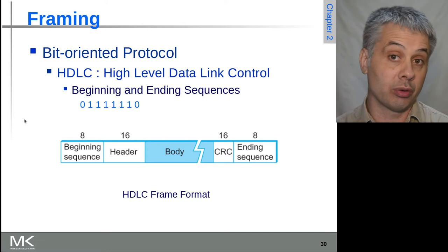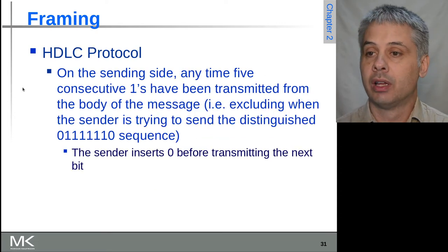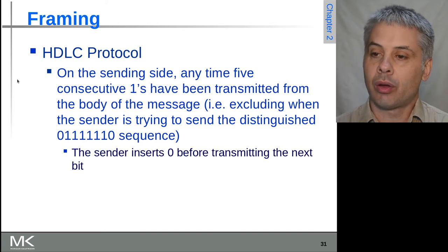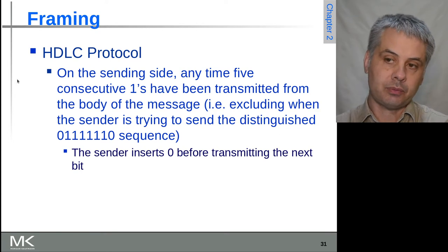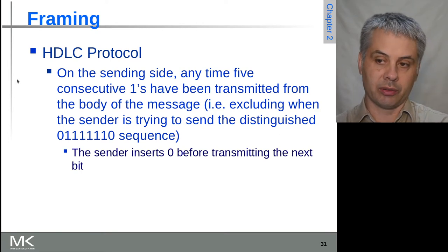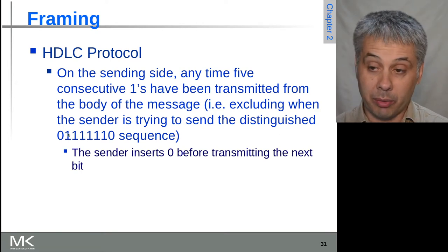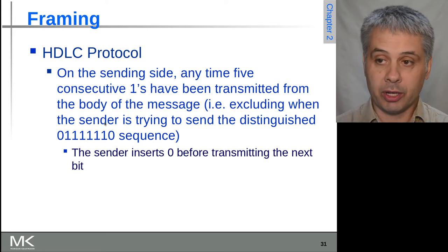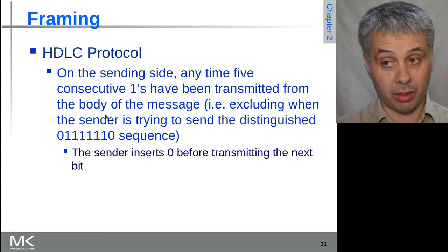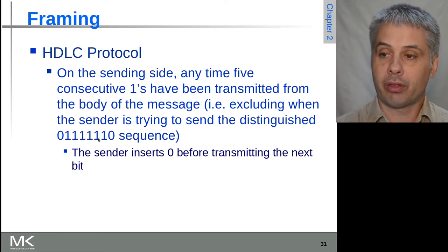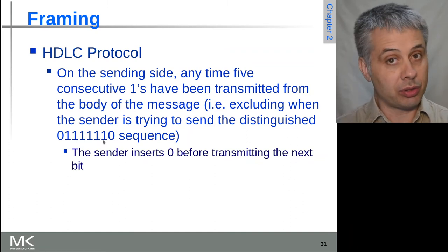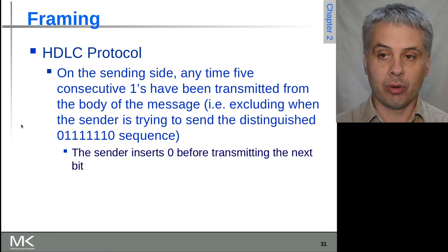To do something like one of these bit-oriented protocols, in the case of HDLC where we have six ones in a row as a special sequence, if the sender wants to send six ones in data, it sends the first five and then inserts a zero to make sure that sequence can't occur.